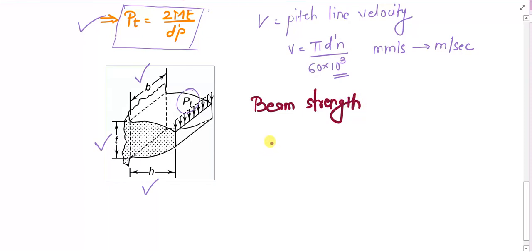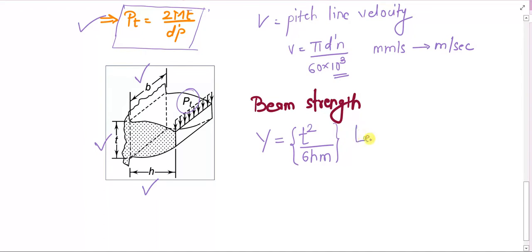For this purpose we use the flexural formula. When we convert that formula suitably using gear terms, we arrive at a term denoted by capital Y. Its formulation is t² / (6h·m). This term is known as the Lewis form factor, and as you can see it gives the combined effect of the thickness of the tooth, the height of the gear tooth, and the module of the tooth.